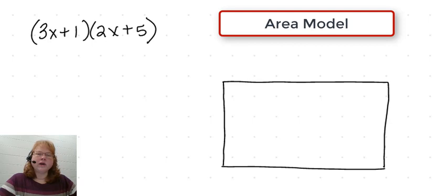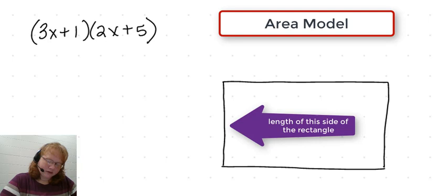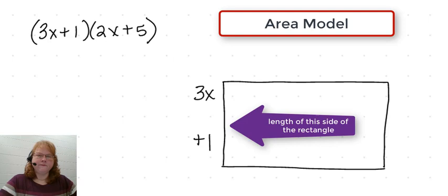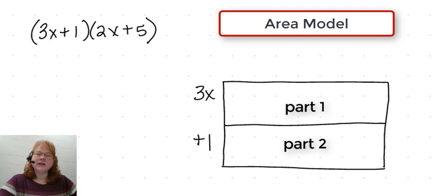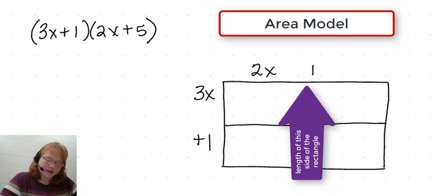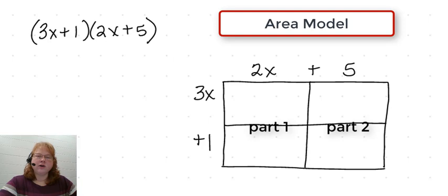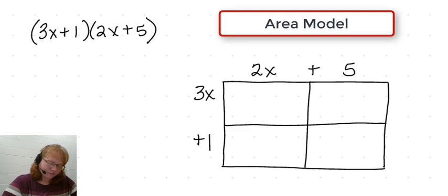We're going to let the first expression 3x plus 1 represent the length of this side of the rectangle. Since the expression 3x plus 1 has two terms, we partition the rectangle into two parts. The second expression, 2x plus 5, will represent the top dimension. It also has two terms, so we partition that into two parts as well. The entire rectangle now has four smaller parts, which will help us do all the multiplication we need. We're going to start with the first rectangle.